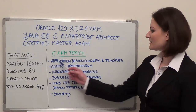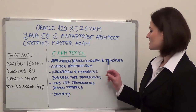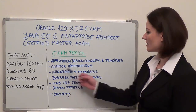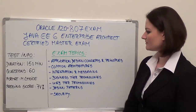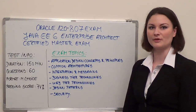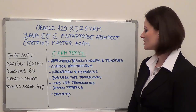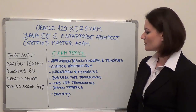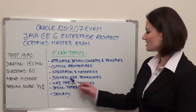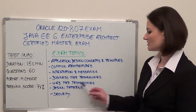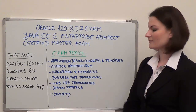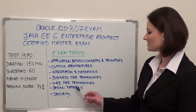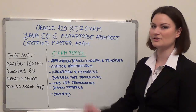The first topic is application design concepts and principles. Next we move on to common architectures. The third topic is integration and messaging. Then we have business tier technologies and web tier technologies, and the final two topics are design patterns and security.